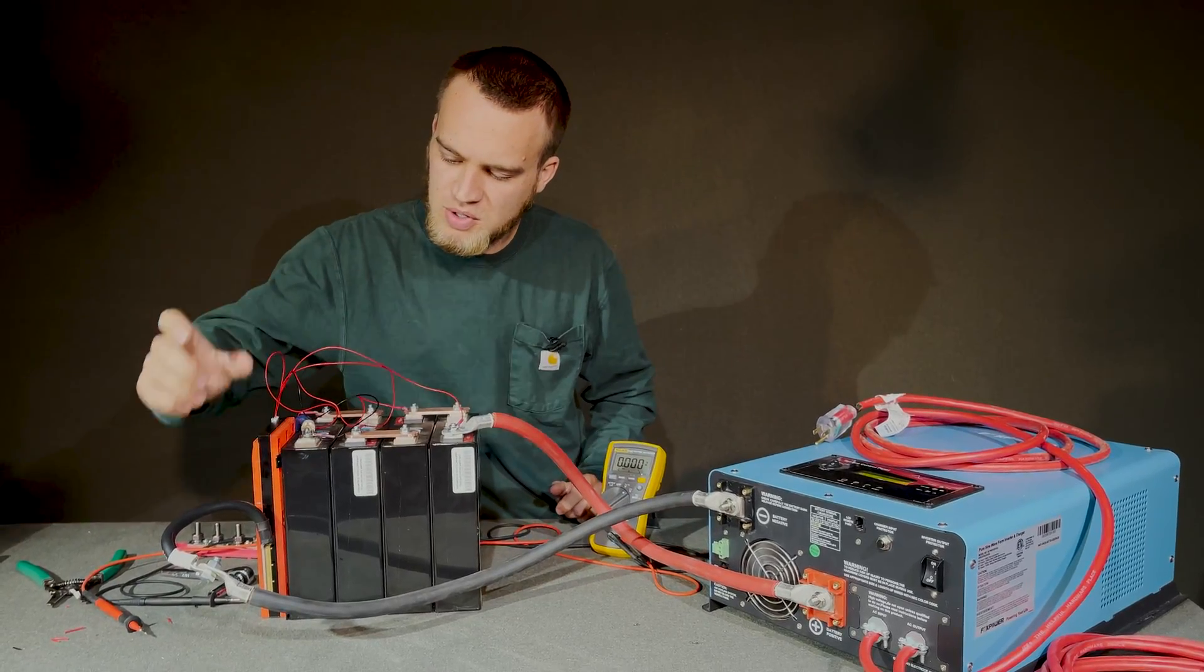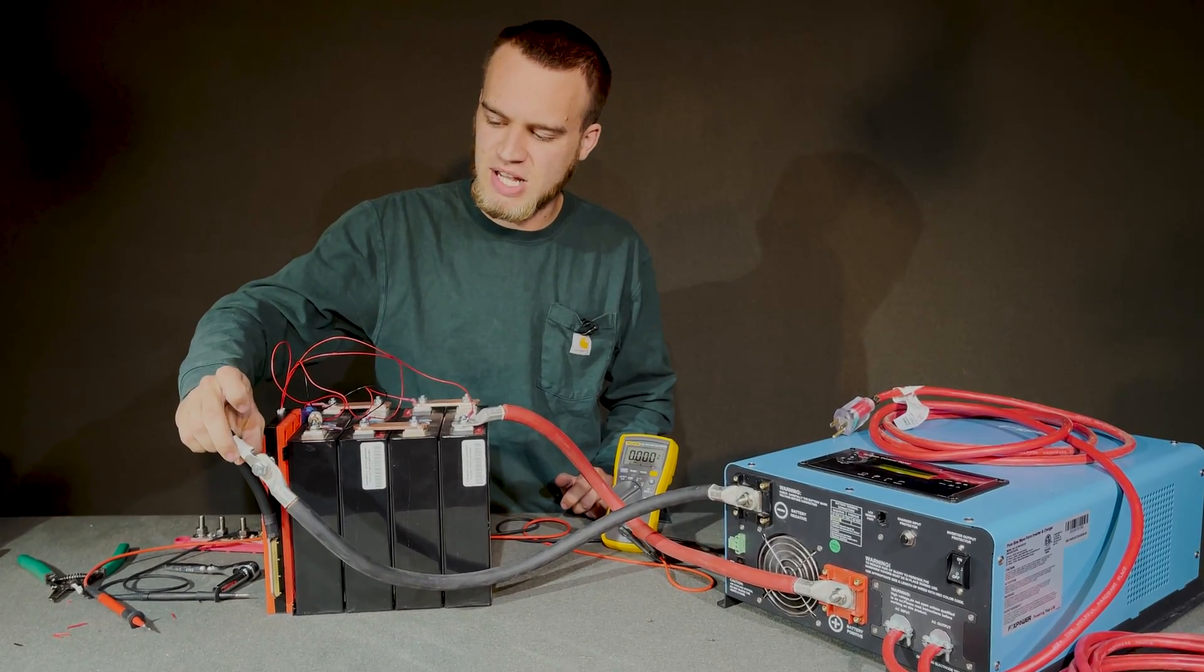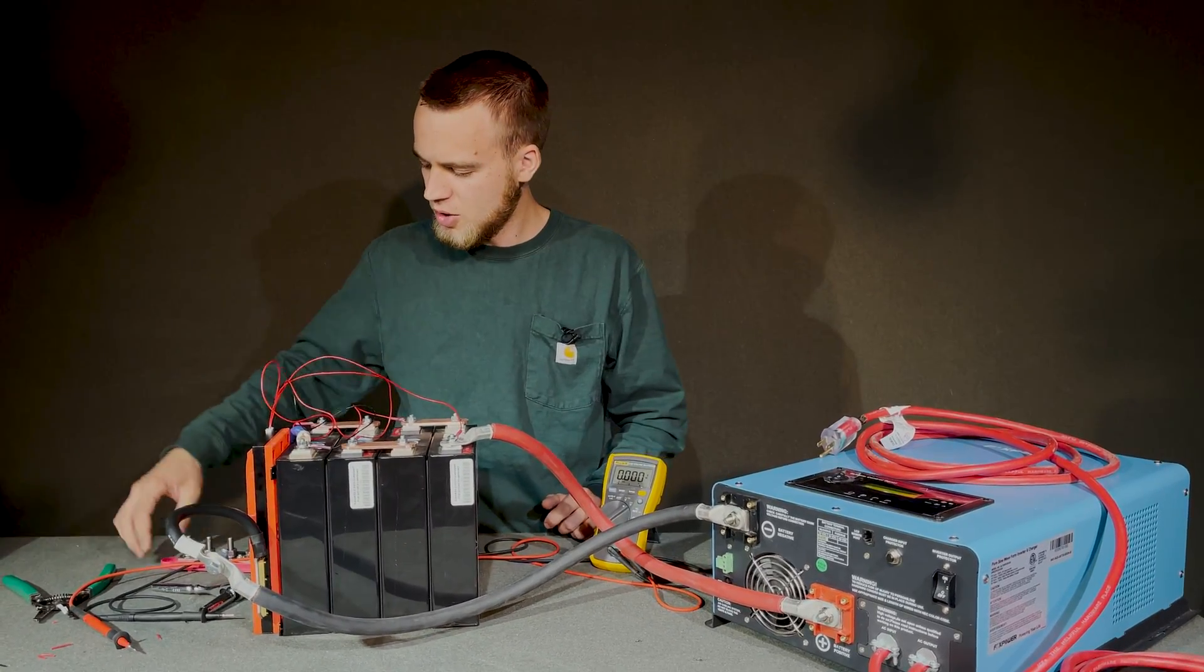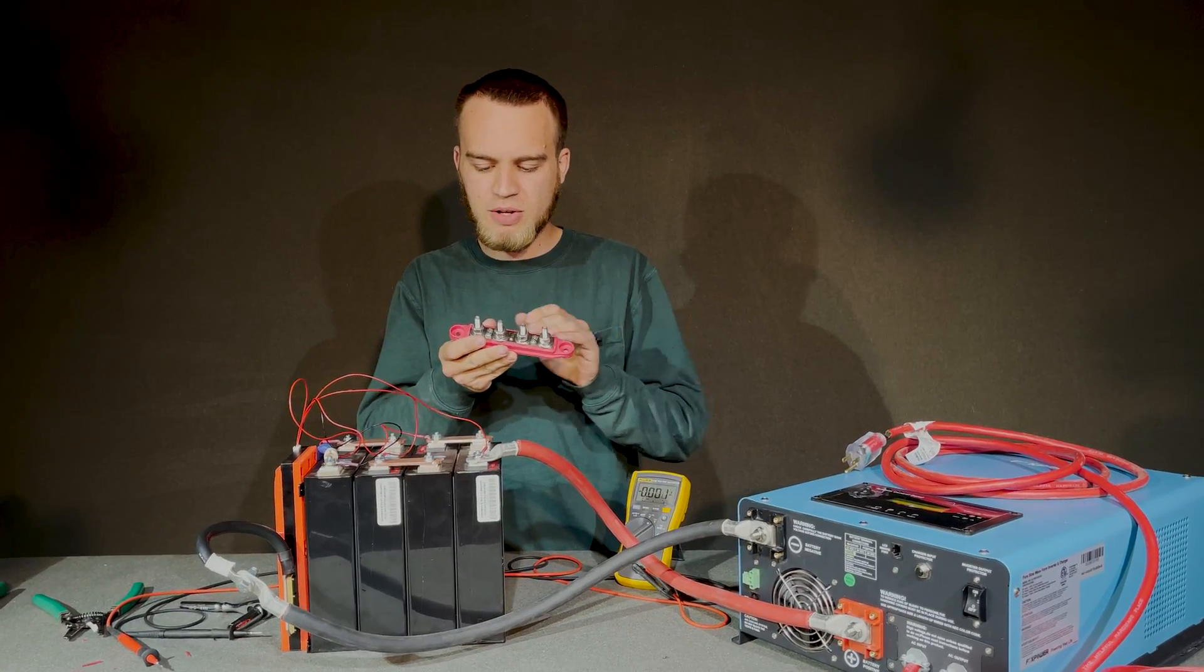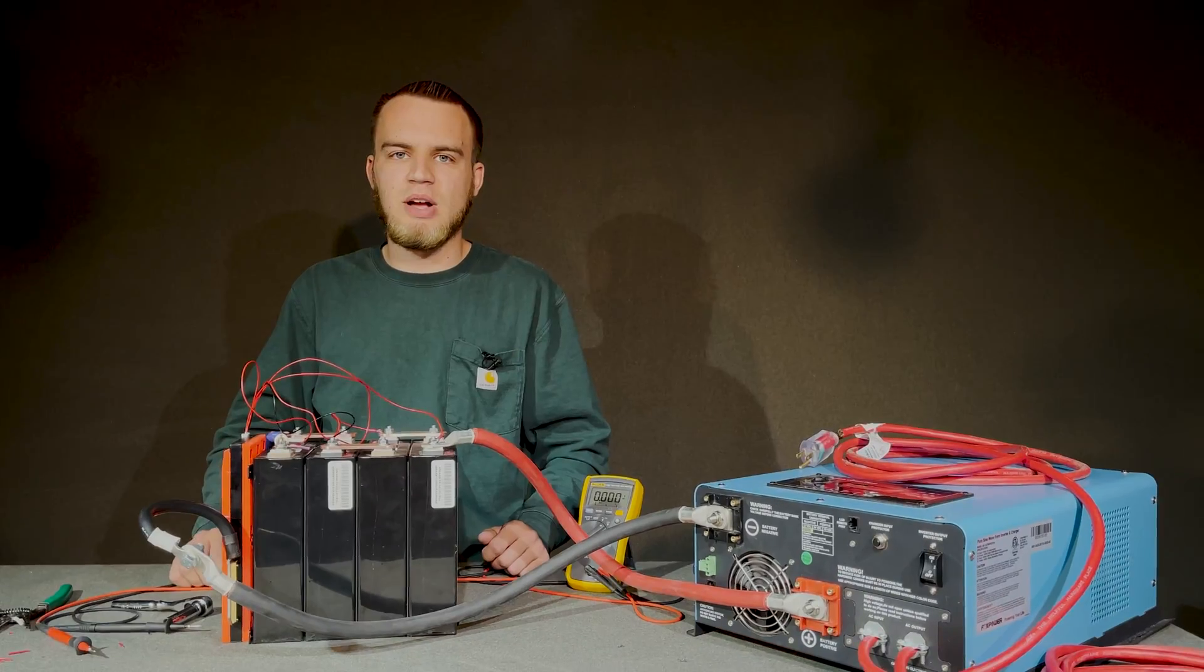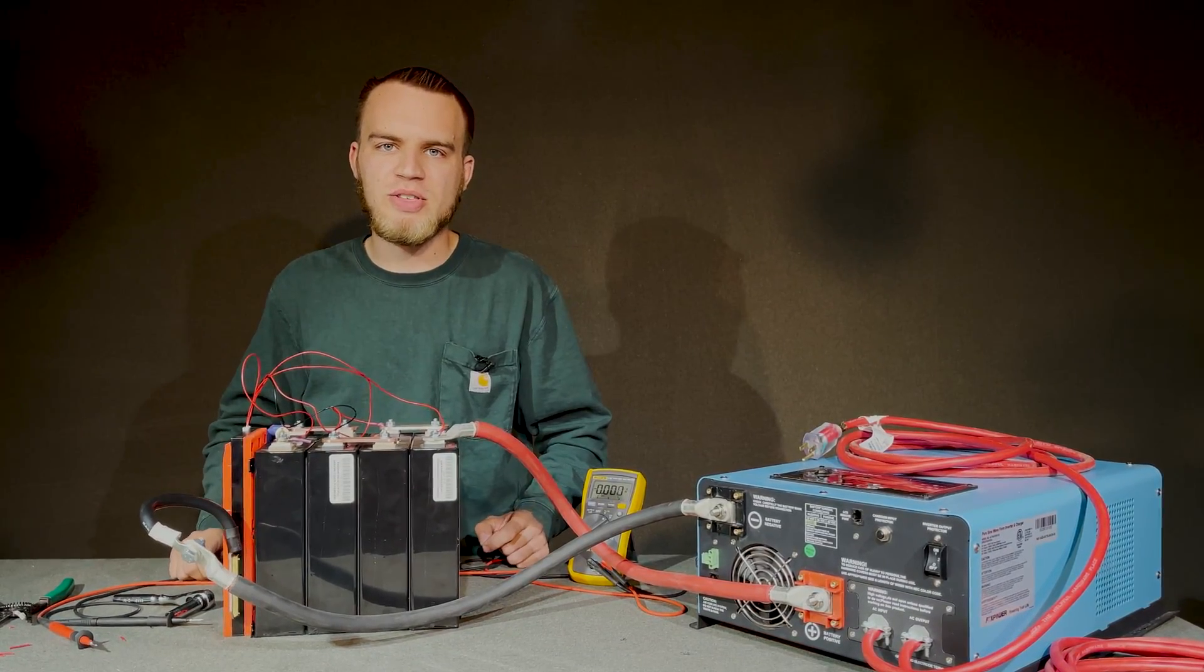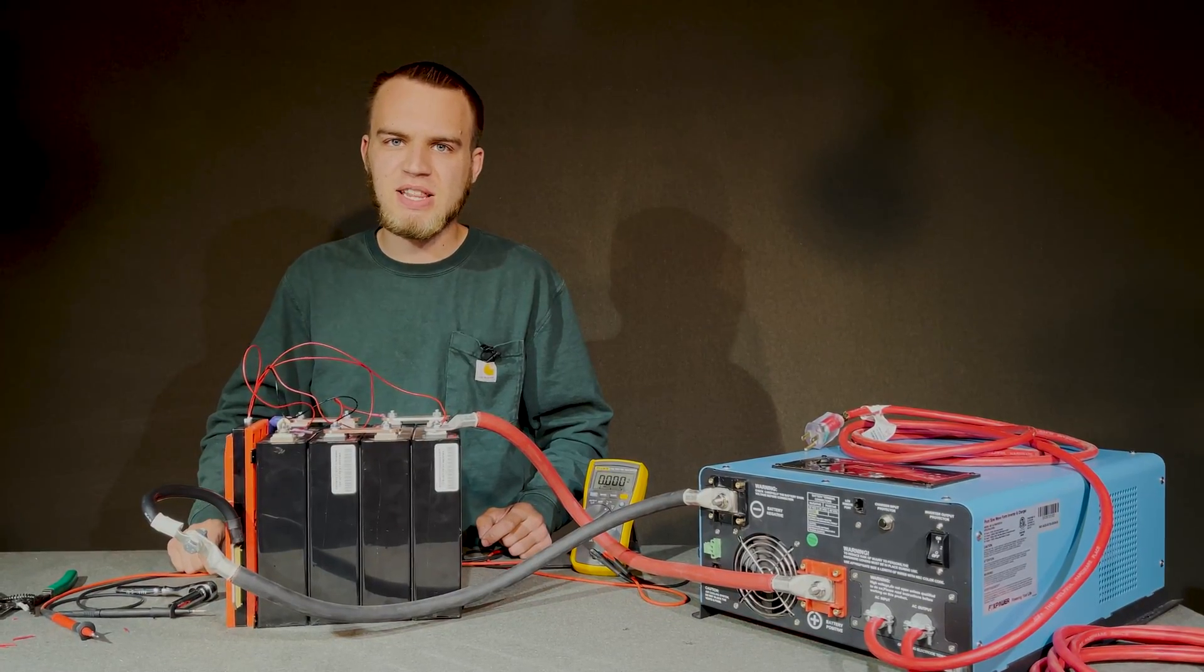Now, the only thing you're going to want to do is apply some heat shrink to this connection from P minus to our output cable or utilize a bus bar similar to this one in order to make all of your connections nice and clean. Now for reference, these batteries right here are the Eneramp EA-170 LIFEPO 4-Cell.